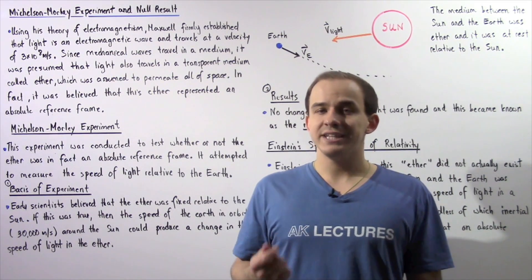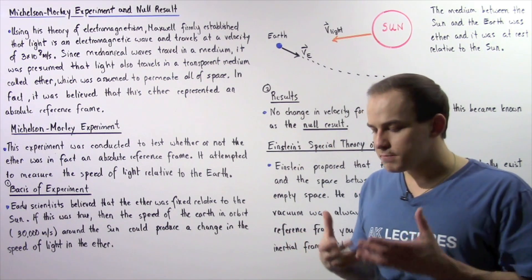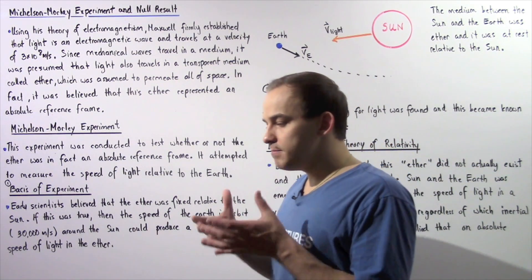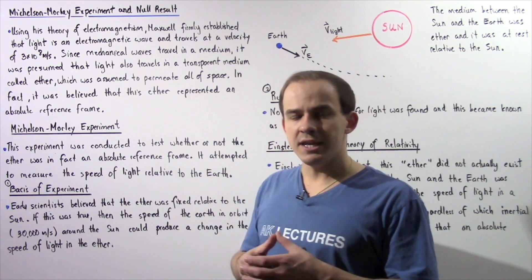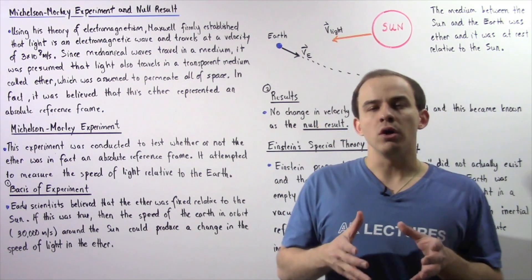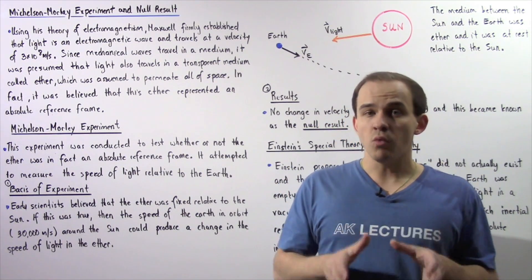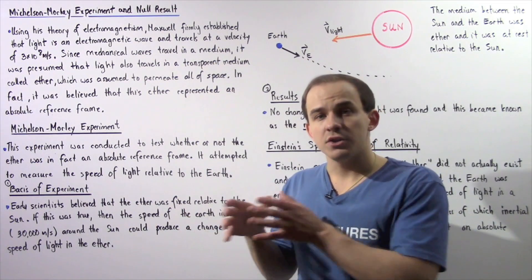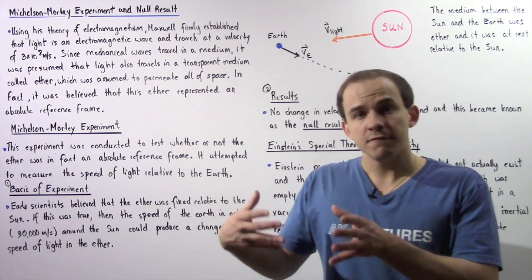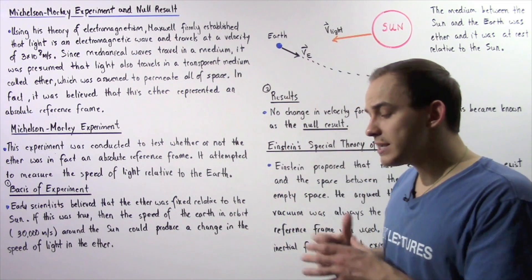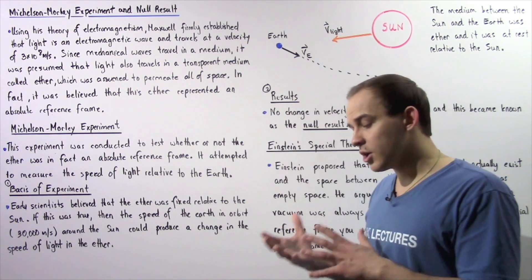So ether was basically a transparent medium, an invisible medium that permeated all of space. And that's exactly why light travels from the sun to the earth because of this medium that was present in between the sun and the earth.